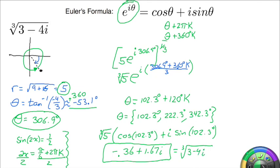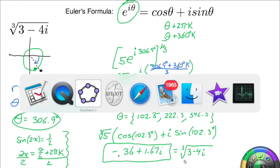And this would be the cube root of 3 minus 4i. One of the roots. There's two others. So let me show you what the other two look like.